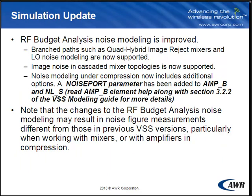RF budget analysis noise modeling is improved. Branched paths such as quadrature hybrid, image rejection mixers, and LO noise modeling are now supported. Image noise in cascaded mixer topologies is now supported. Noise modeling under compression now includes additional options. The noise port parameter determines whether the block's thermal noise is generated at the input port or at the output port in RF budget analysis simulations. For more information about the noise parameter, please read the AMP-B element help along with section 3.2.2 of the VSS modeling guide.